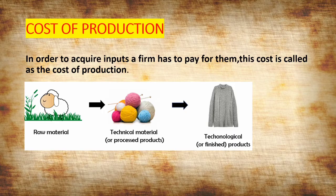Now, in order to acquire inputs, a firm has to pay for them. This cost is called the cost of production.